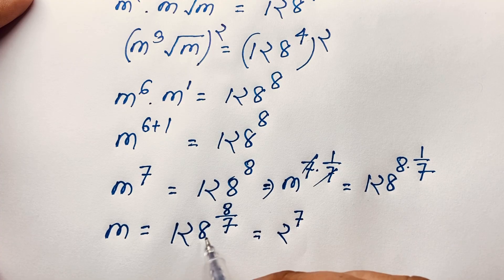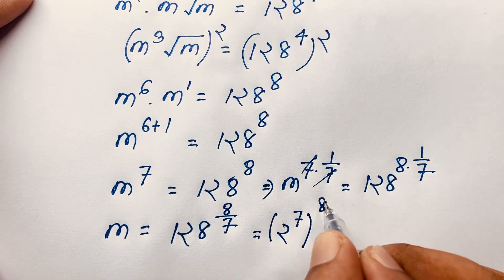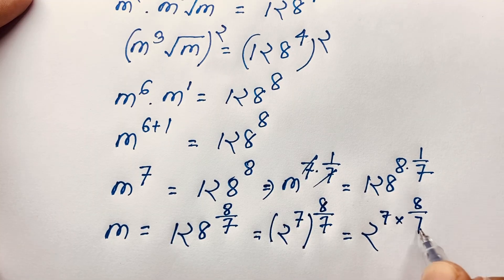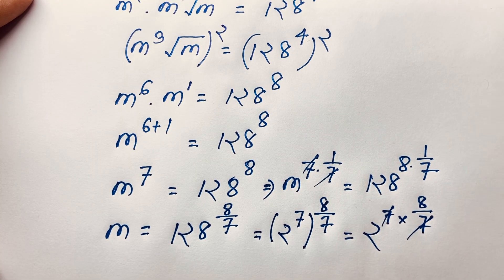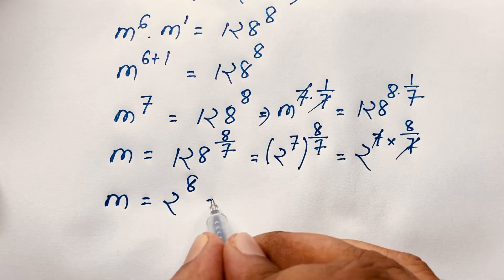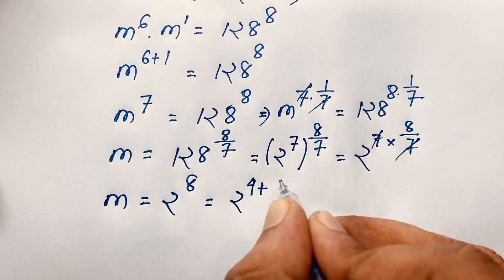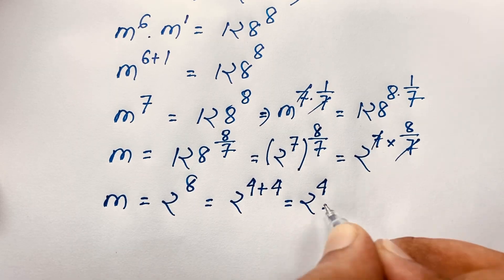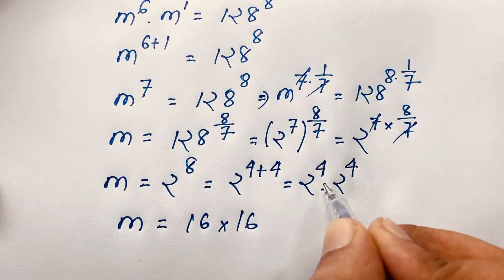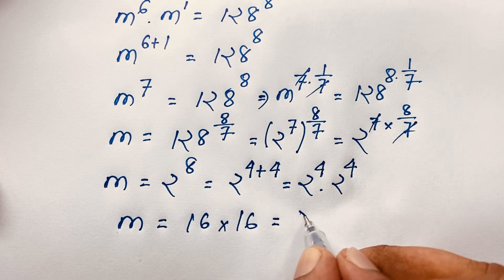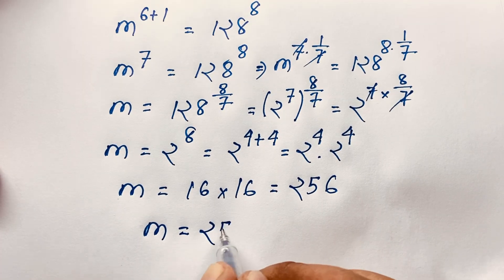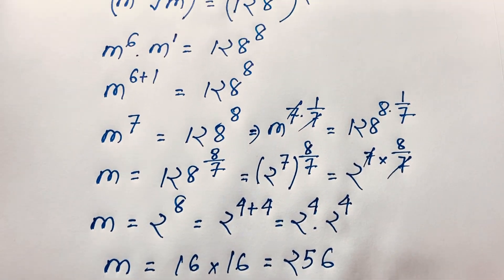So m equals 2 to the power 7, with bracket power 8 over 7. You can see 2 to the power 7 times 8 over 7 — the 7s cancel, and we find m equals 2 to the power 8. Now 2 to the power 8 equals 4 times 2 to the power 4, which is 16 times 16, equals 256. So our final answer is m equals 256.